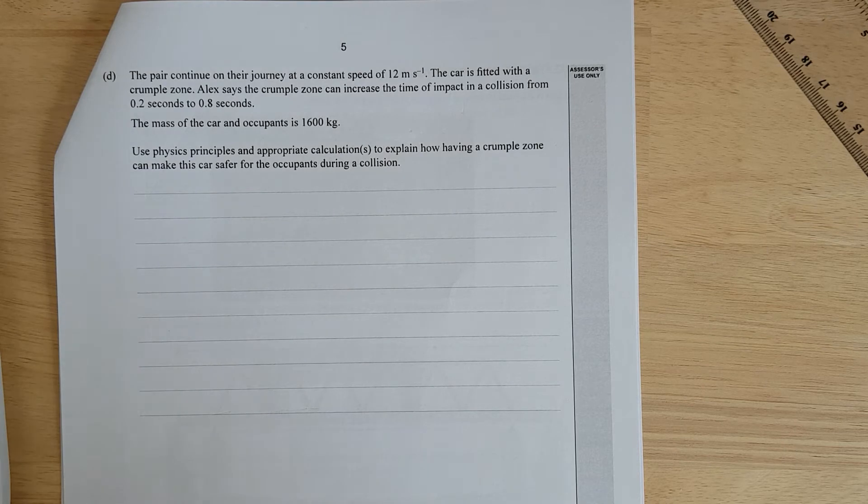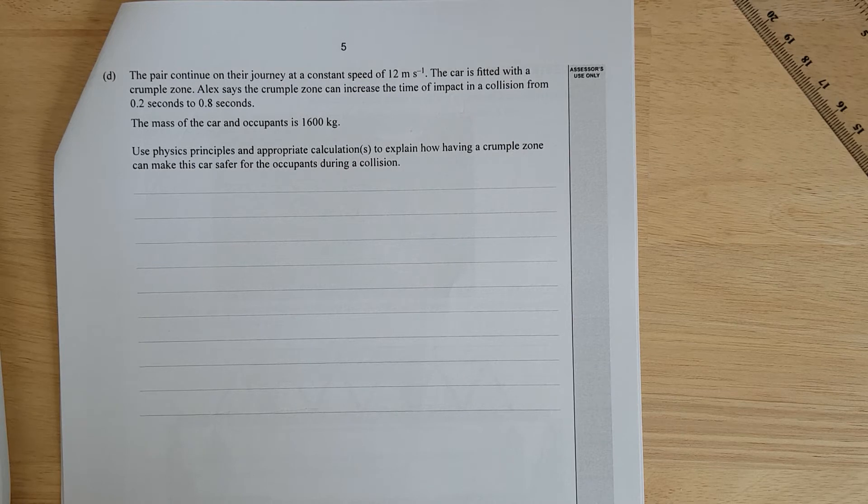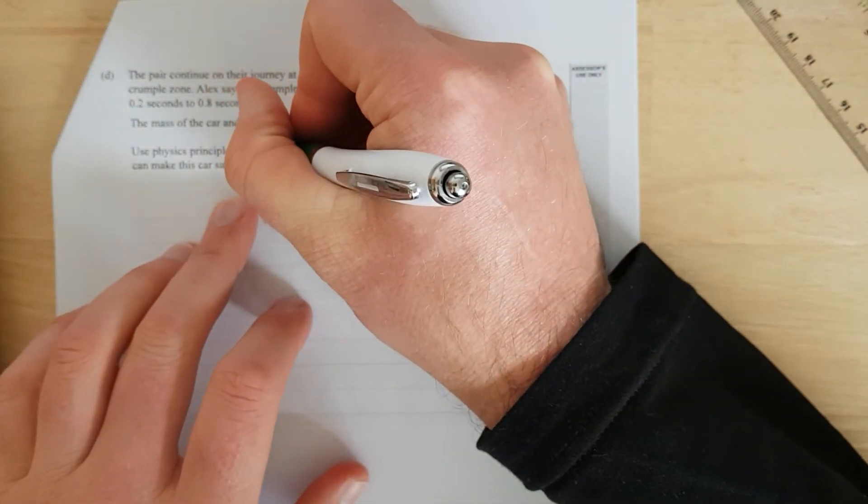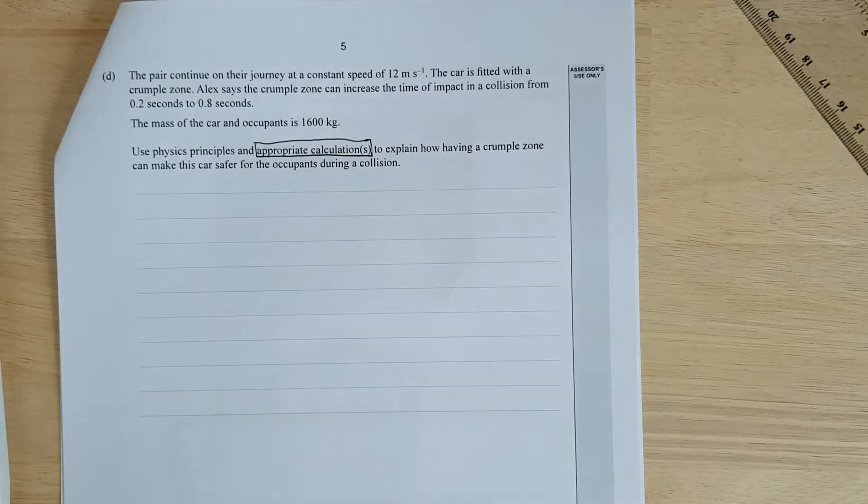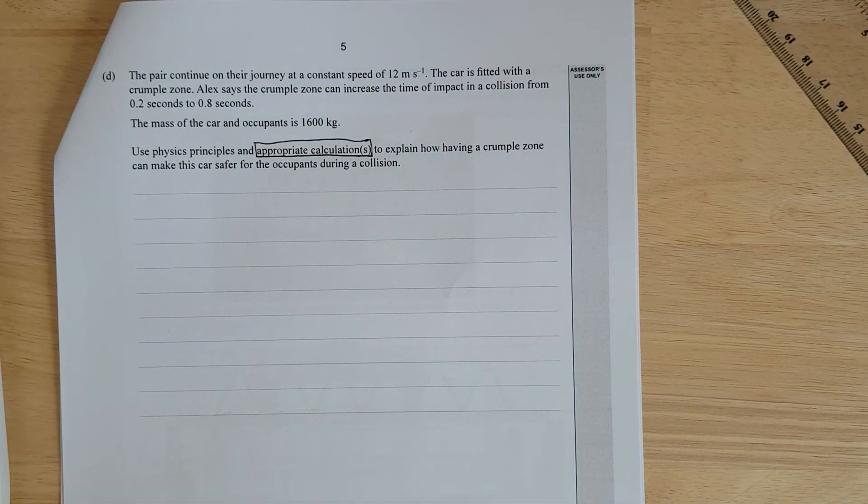Next question. The pair continue on their journey at a constant speed of 12 meters per second. The car is fitted with a crumple zone. Alex has a crumple zone can increase the time of the impact in a collision from 0.2 seconds to 0.8 seconds, the mass of the car and occupants is 1,600 kilograms. Use physics principles and appropriate calculations to explain how having a crumple zone can make this car safer for occupants during the collision. When it says appropriate calculations, it's given a massive hint. It wants you to do a calculation with a crumple zone, and a calculation without.